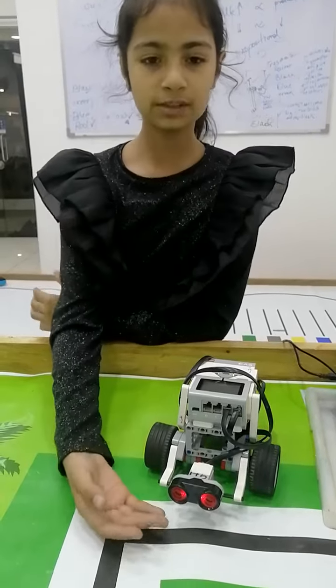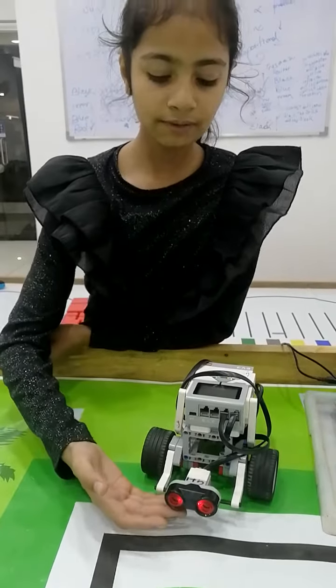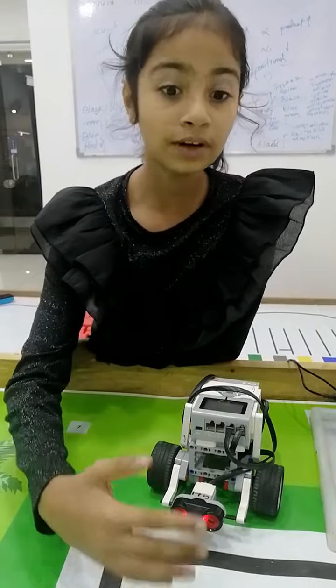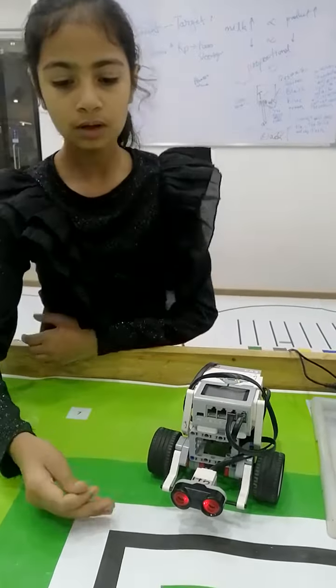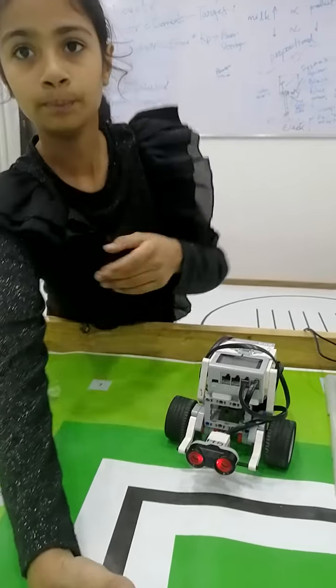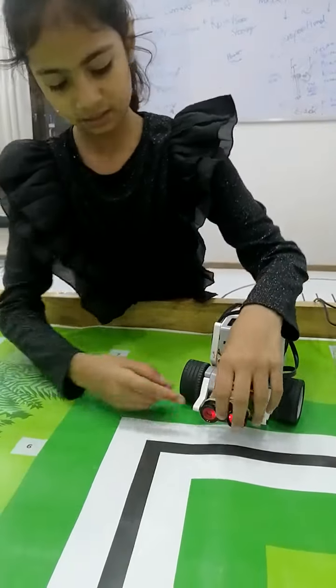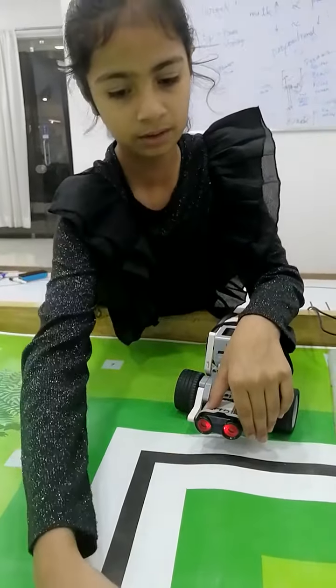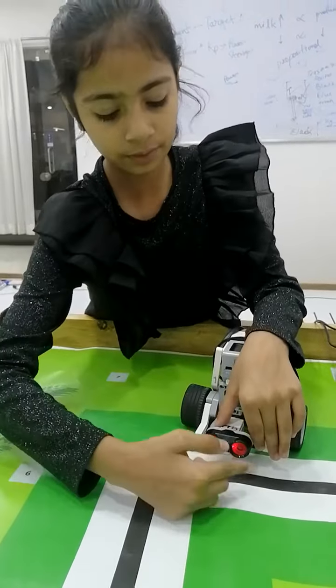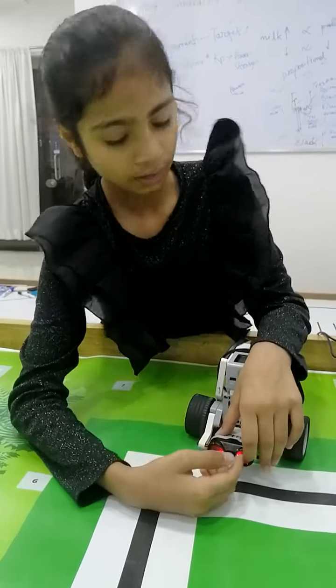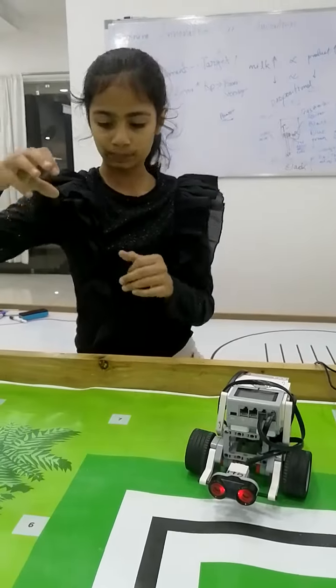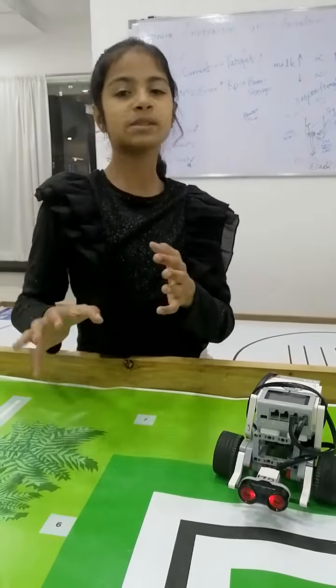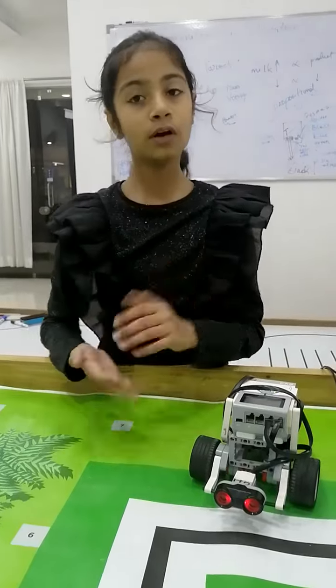So the ultrasonic sensor basically will detect sound in direction. So suppose the sound is coming here. This eye will send it and it will bounce and it will be sent here. And when something bounces and it comes back, that is known as an echo.